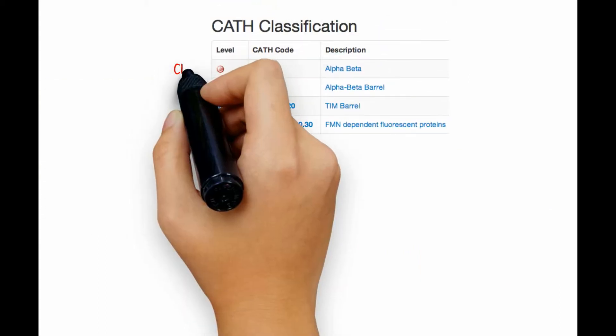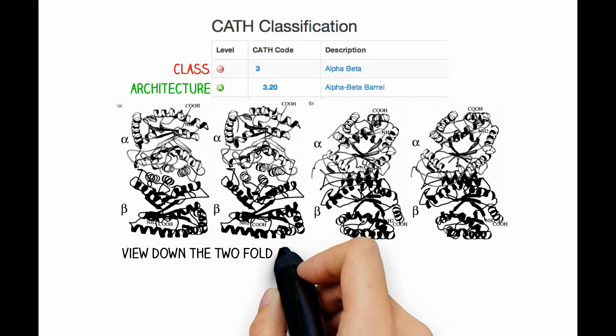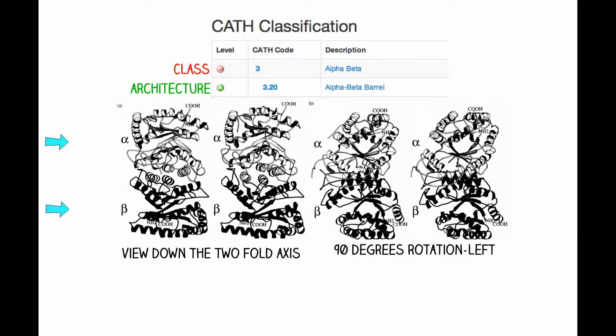This heterodimer with two identical domains is in the class of alpha and beta folds, which are its two major chains. It also has an alpha-beta barrel architecture.